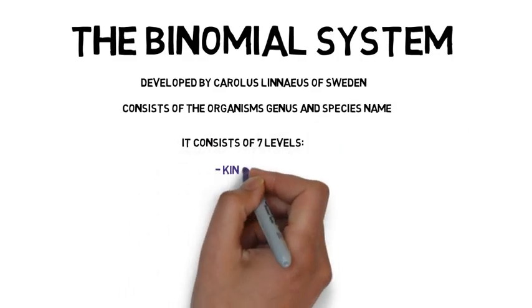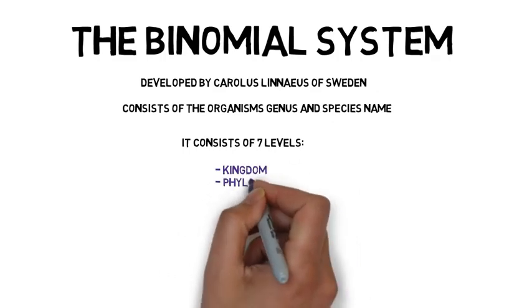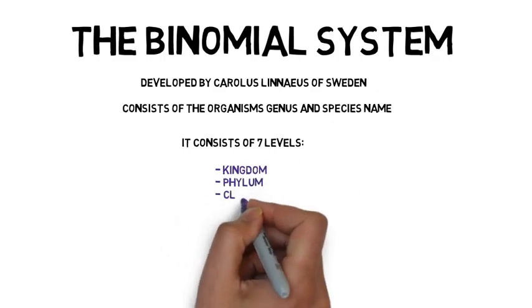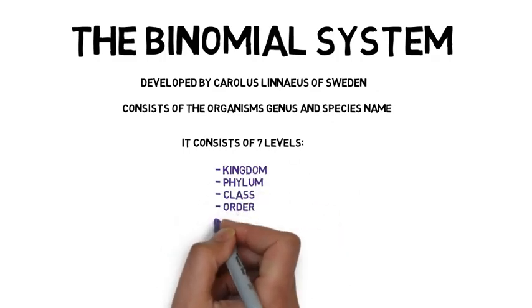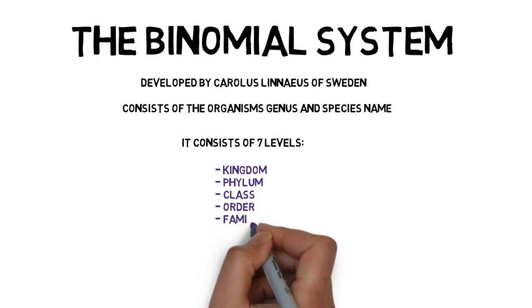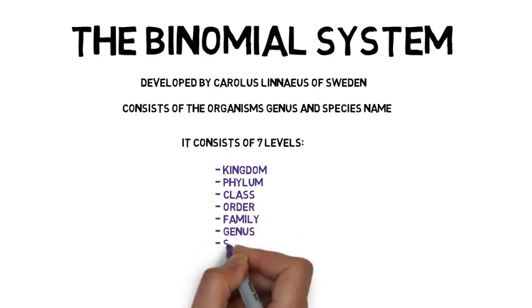The seven levels are: Kingdom, Phylum, Class, Order, Family, Genus, and Species.